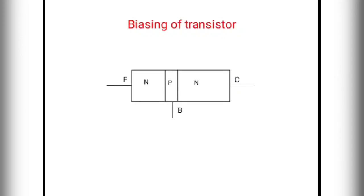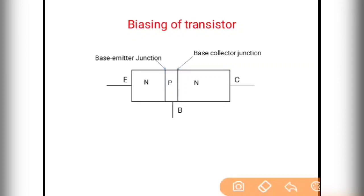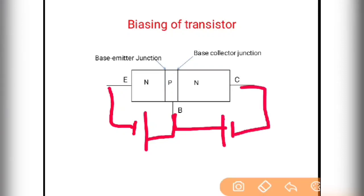Now, the biasing of the transistor. In the schematic representation, the central P region is the base, and the N regions are the emitter and collector. The junction between base and emitter is called the base-emitter junction, and the junction between base and collector is called the base-collector junction. When we connect the battery, we can apply forward or reverse bias to these junctions. When both junctions are forward biased and voltage applied is greater than knee voltage, the transistor conducts and behaves as a conductor — this type of biasing is of no use. Similarly, when both junctions are reverse biased, the transistor behaves as an insulator — this type of biasing is also of no use.